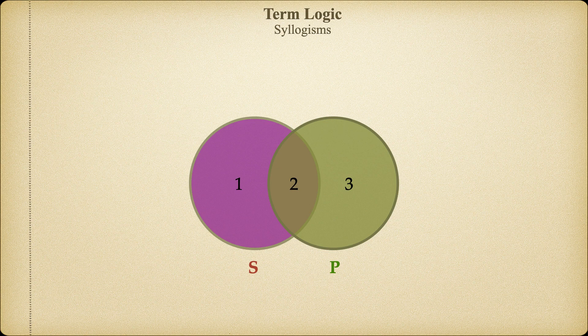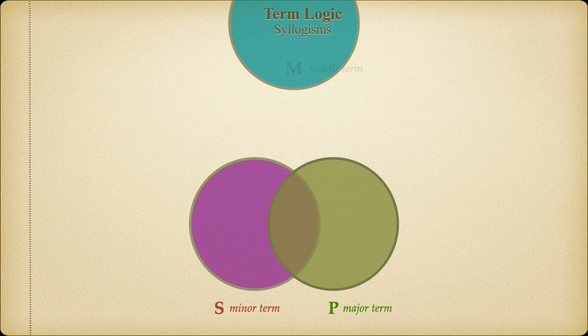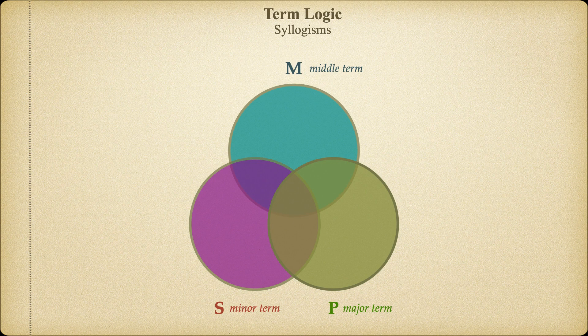These simple diagrams are fine for dealing with categorical propositions. But a categorical syllogism has three terms — the major, minor, and middle term. Thus, we're going to need more complex diagrams to represent all three distinct terms. Adding a circle to represent the middle term helps us see the possible connections between all three sets. Notice that we now have seven distinct regions. By filling in the information from the premises, we'll see what must be the case — does the conclusion have to follow?